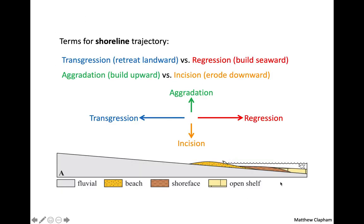Transgression is a retreat landward — the ocean is moving up. Regression is building seaward — the ocean is moving back. Progradation goes with regression: a prograding coast goes with a regressing sea. Retrogradation goes with transgression: a transgressing sea goes with a retrograding coast. What we're looking at is the stacking of facies patterns. If we see fluvial rocks, then beach rocks, then deeper ocean rocks on top, we can assume the oceans were transgressing and coasts were retrograding. The opposite stack — open shelf, then shore face, then fluvial — indicates regression and progradation.